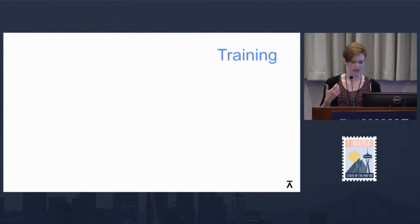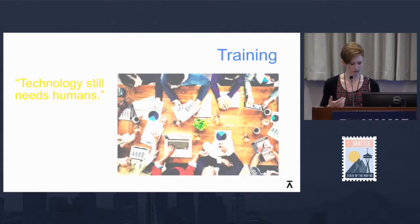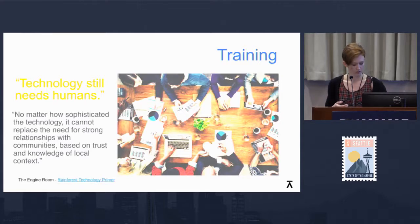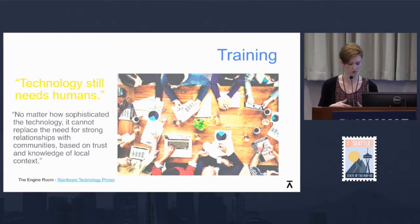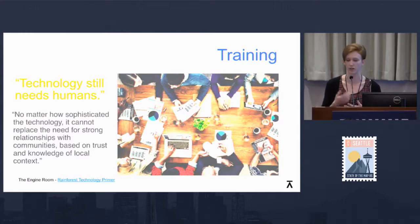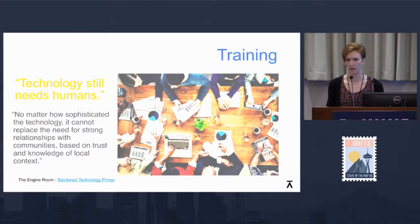Whether or not we're willing to sacrifice some of the benefits of this technology should depend on how it affects participation, because technology still needs humans. When you're looking at the technology you're choosing, you should think about the number of people that will be able to be involved and what kind of training is required, which depends on the sophistication of the technology and the prior knowledge of the community. In Kosovo, training took a half day. In a village of people unfamiliar with mobile technology, it would take a bit longer.